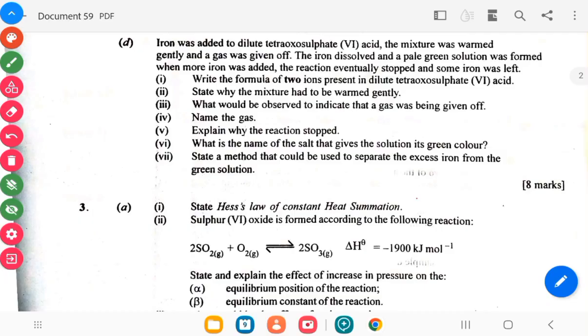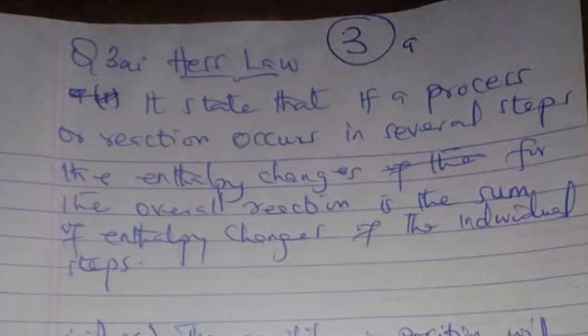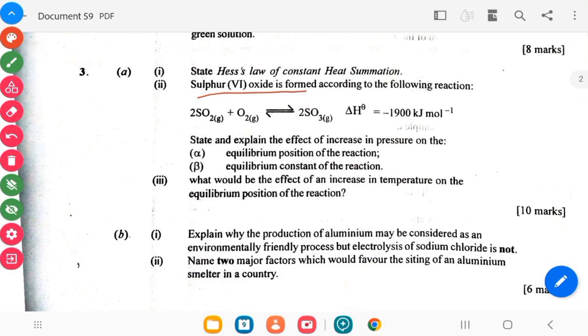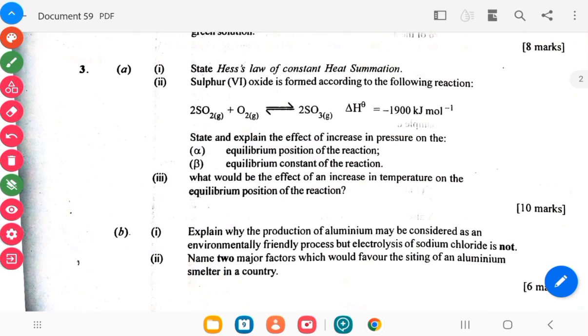Then move on to question 3. State Hess's law of constant heat summation. Sulphur VI oxide is formed according to this reaction: 2SO2 + O2 ⇌ 2SO3, ΔH = -190.0 kJ mol-1. State and explain the effects of increasing pressure on the equilibrium position of the reaction and equilibrium constant of the reaction.